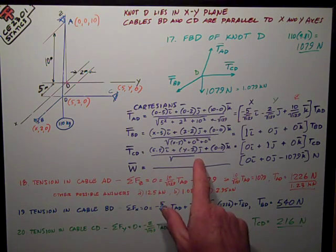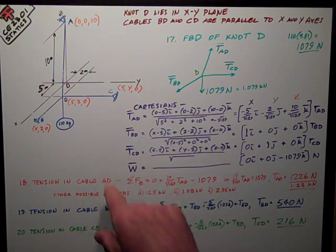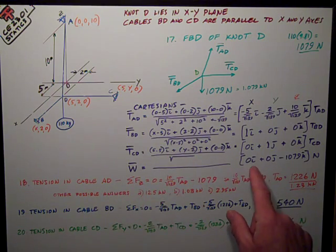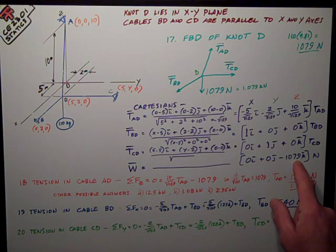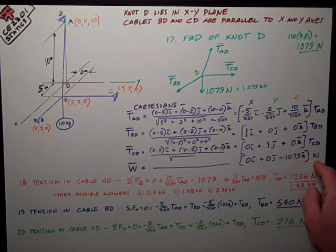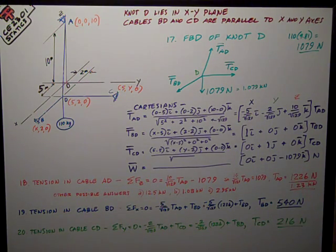I express my weight in Cartesian format. It is pure z in the negative direction, 0i, 0j, negative 1079k newtons. Now I'm ready to quickly solve the whole, all three problems. Number 18 was give me the tension in cable AD, the vertical one, mostly vertical.